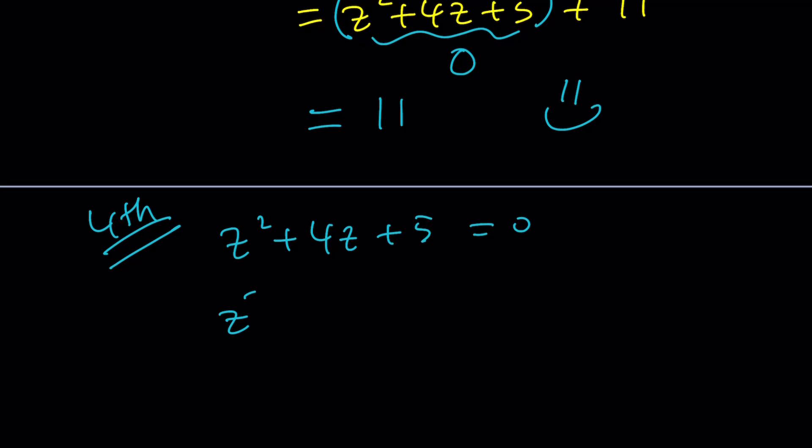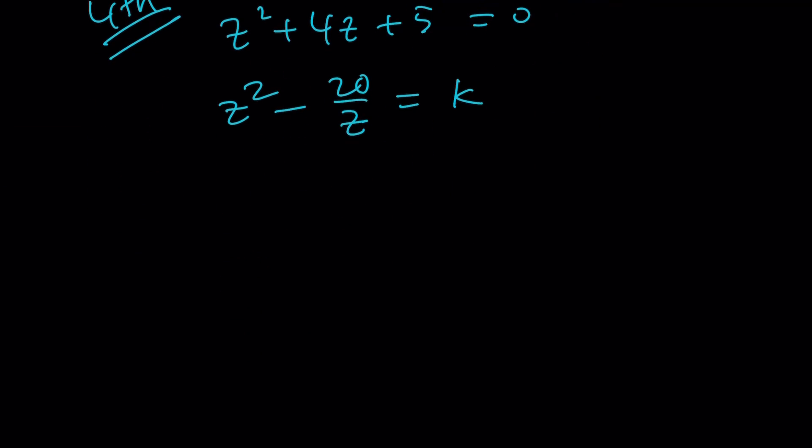I'm supposed to evaluate z squared minus 20 over z. By the way, by evaluate I mean that we're supposed to get a numerical value. Because you can always get this in terms of z. That's not the goal. It's not fun at all. I want to get something numerical like a constant. Maybe something like k from here. Makes sense? So my goal is to find k. Let's focus on that. Make a common denominator.